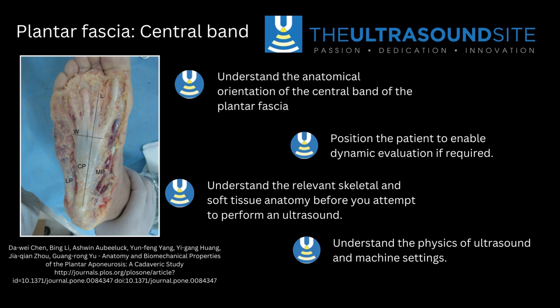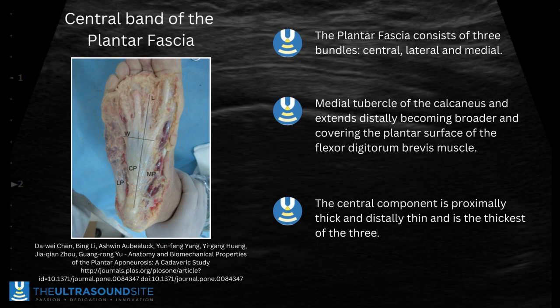The central band of the plantar fascia is one of three bands: the central, lateral, and medial. The medial tubercle of the calcaneus is where this central band originates, and it then thins out over the deeper position of the flexor digitorum brevis muscle, which we'll see in a second. The central band is the thickest and easiest to see.